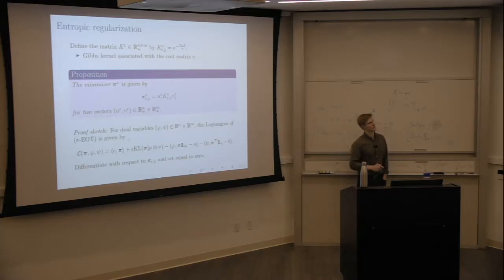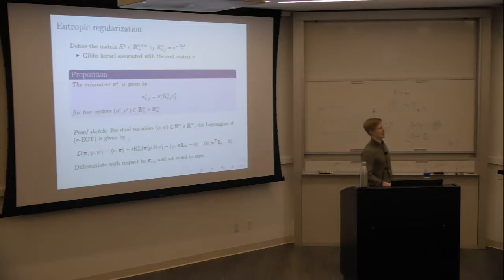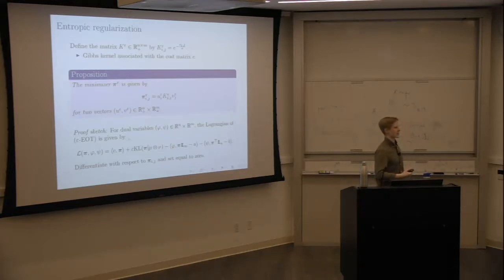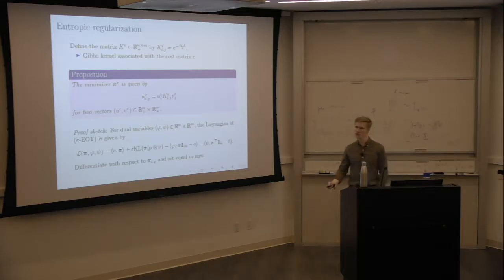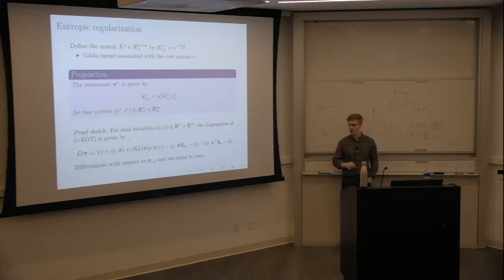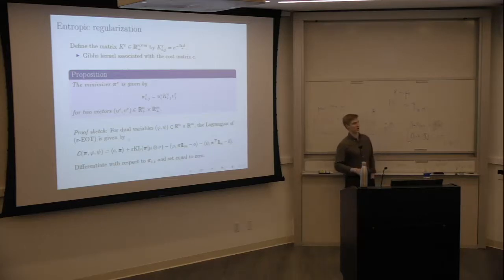Intuitively, this seems like a quite natural regularization. But let's think more carefully about it — the form of the minimizers, and whether making this regularization is actually useful computationally. We can give a pretty complete, if implicit, characterization of the solution to the entropically regularized optimal transport problem.